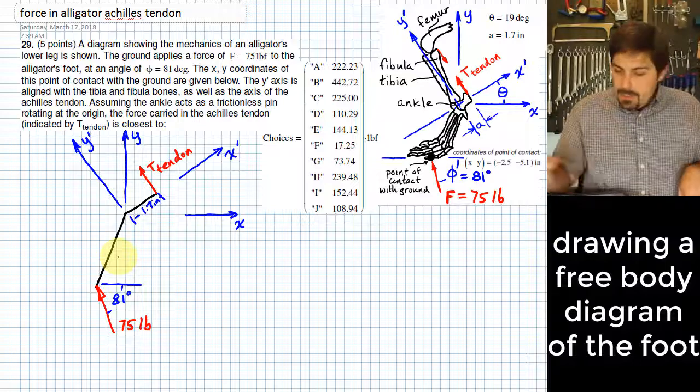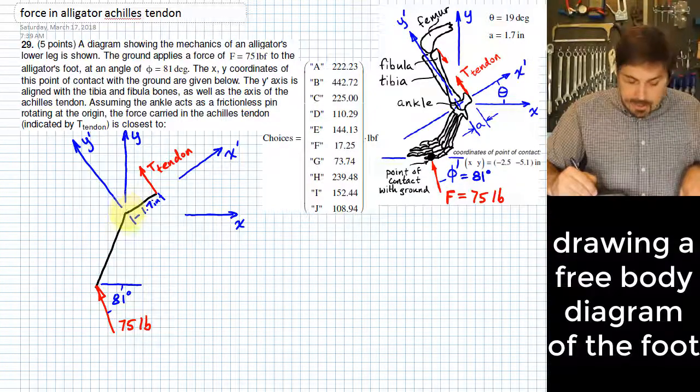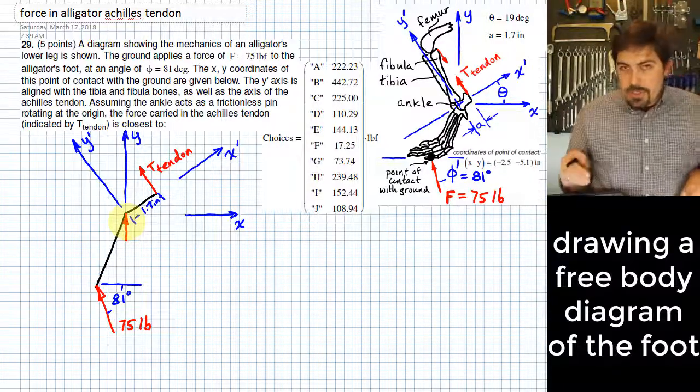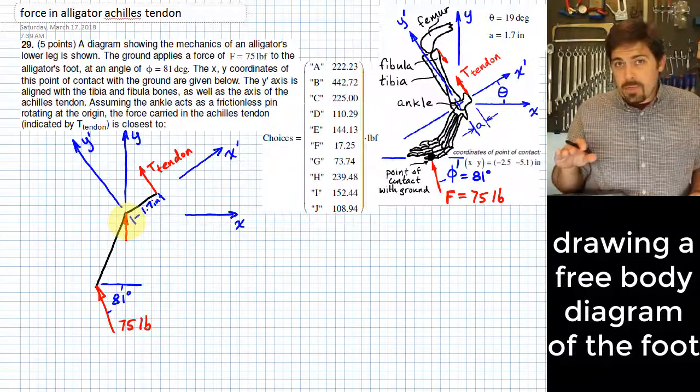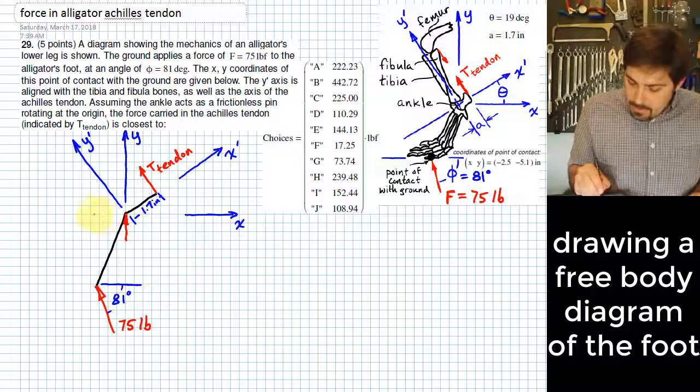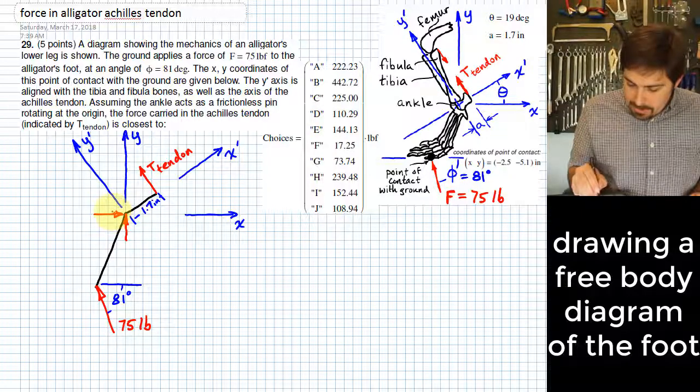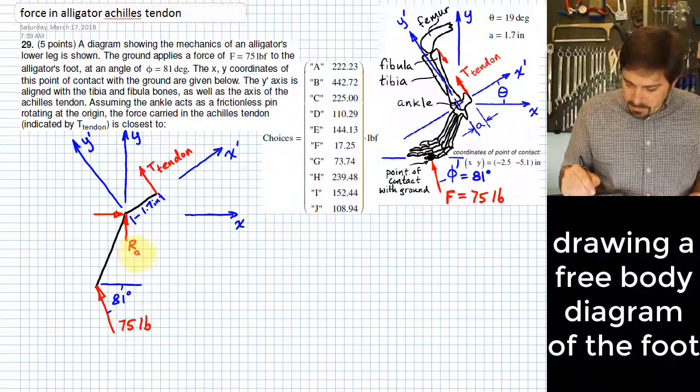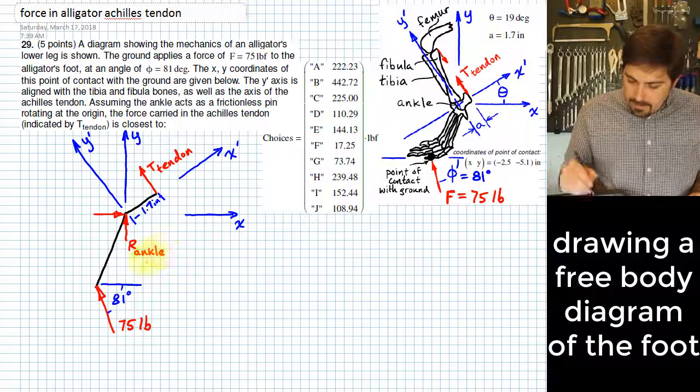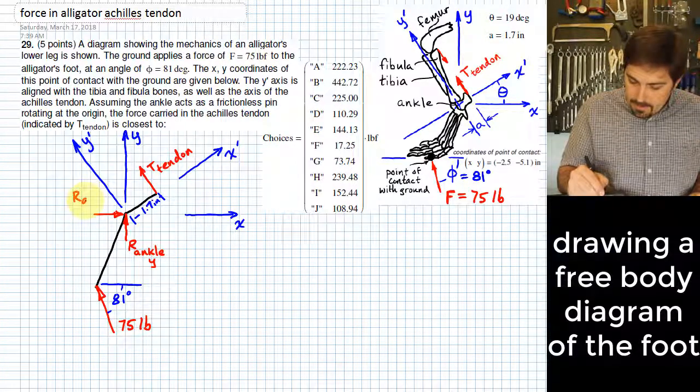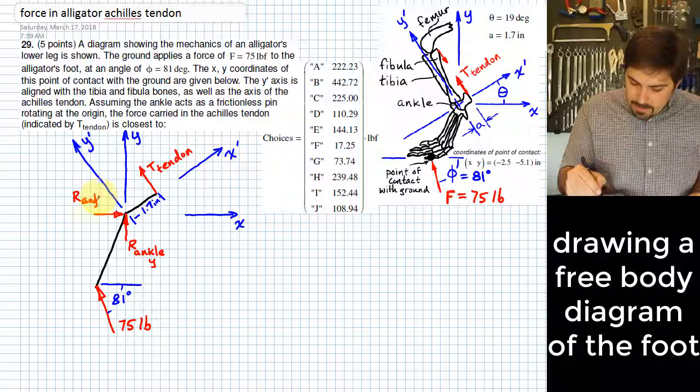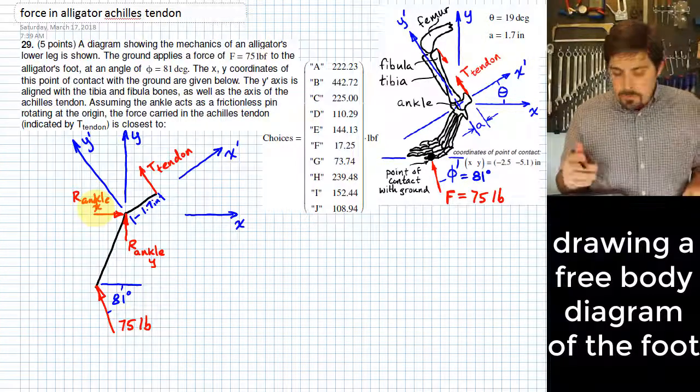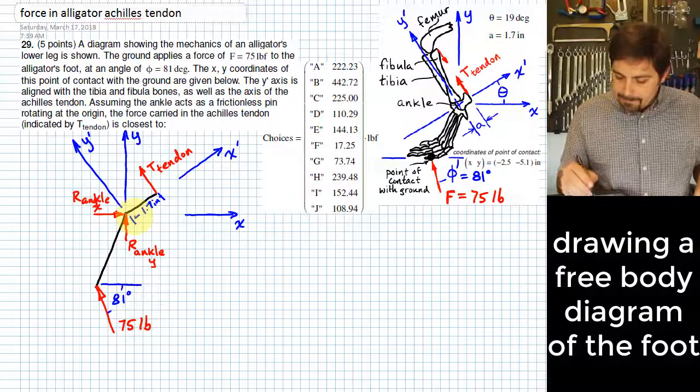The only other thing that we need to do is, well, there's a couple things. One, we should probably show on here the types of reactions that would exist on a pin joint. Remember, a pin joint doesn't allow translation to the side or translation up and down, and so the two things that prevent those kinds of motion would be reaction forces left and right and up and down. I'll just call these R-sub-ankle Y, and then this is R-ankle in the X, just to acknowledge that I have those two forces happening at the ankle joint.